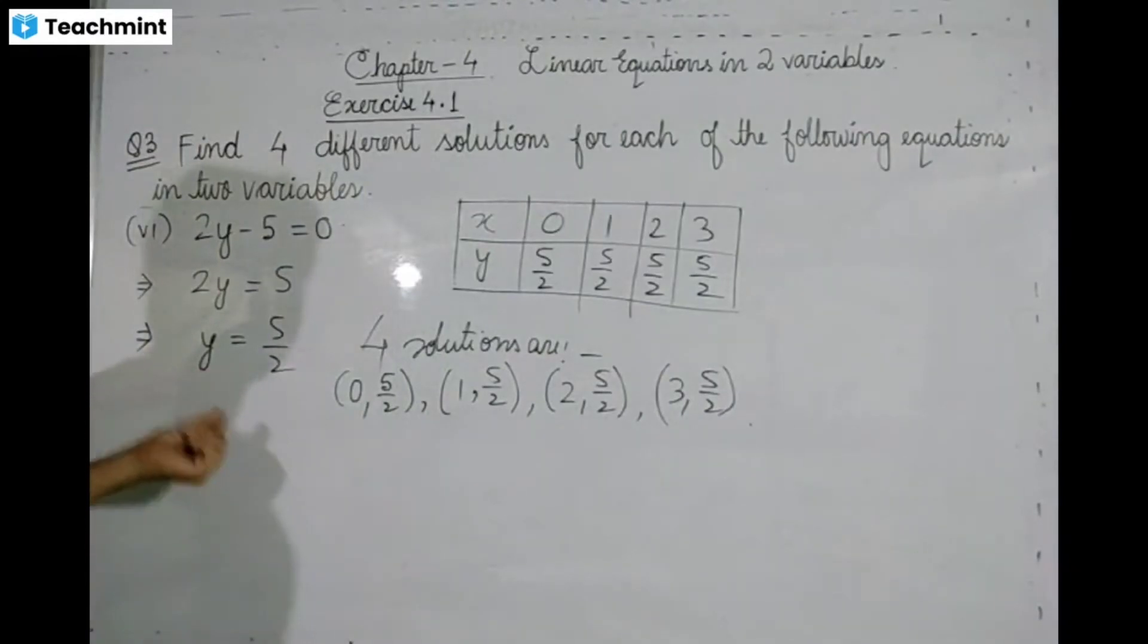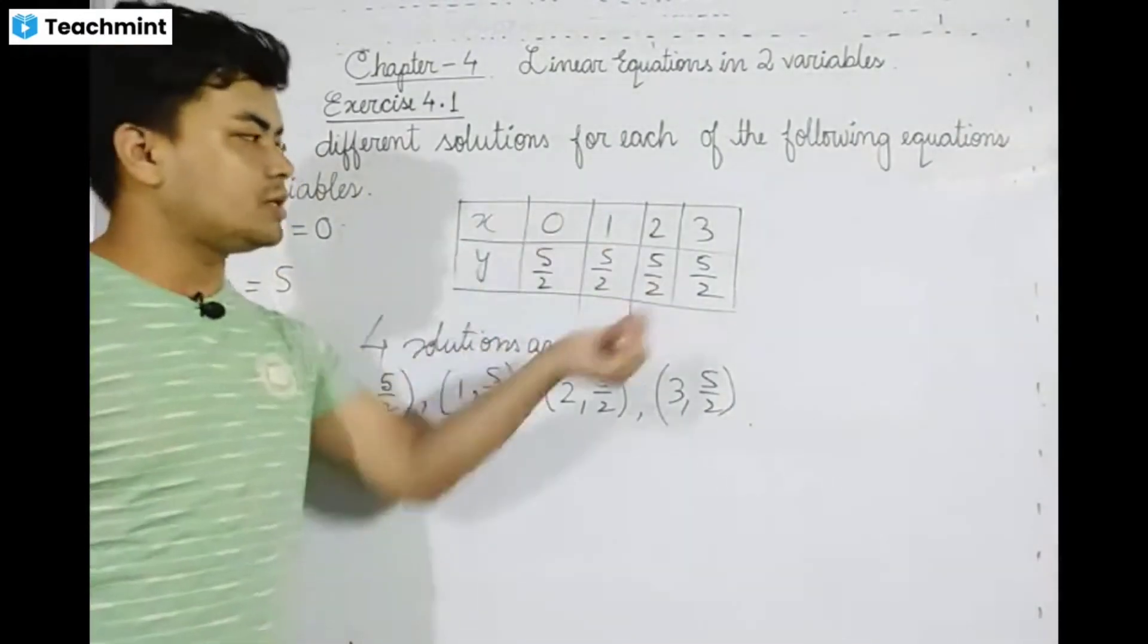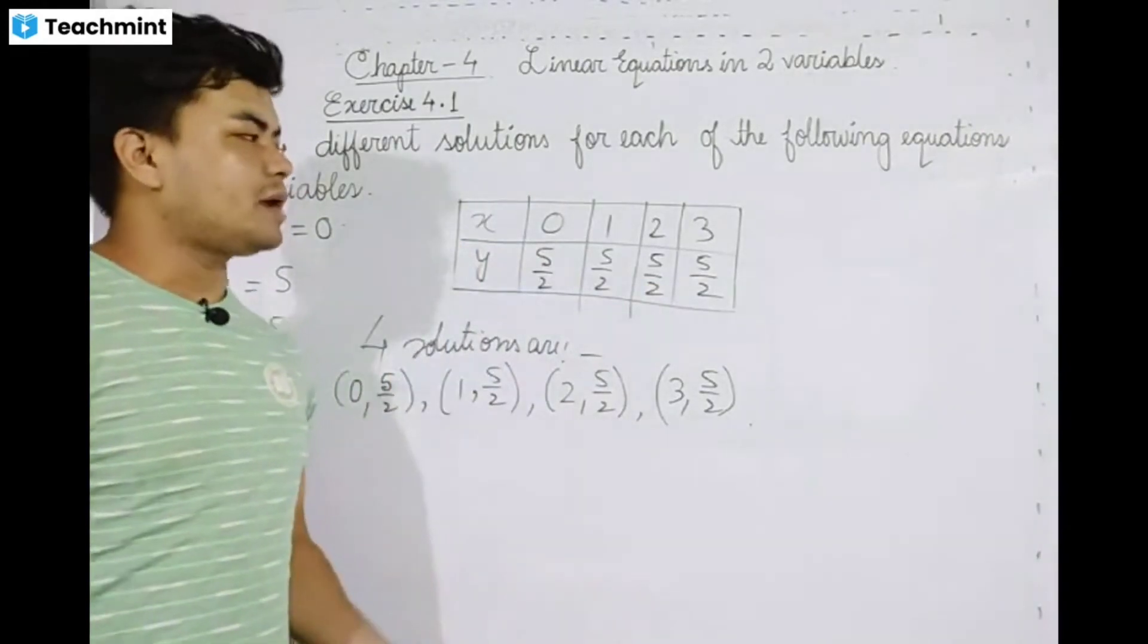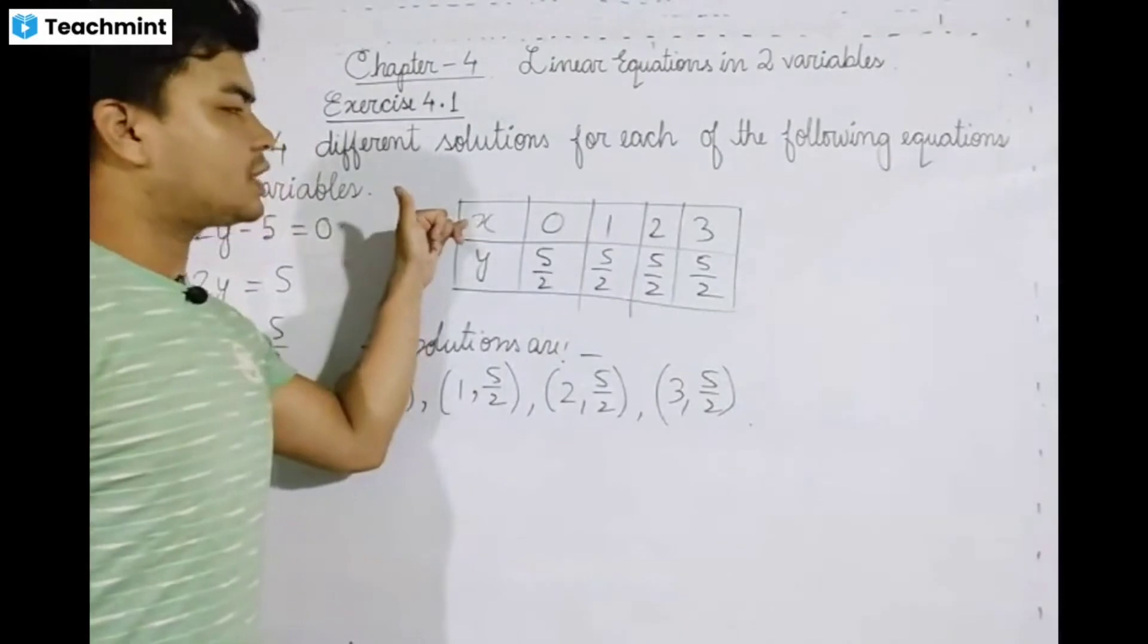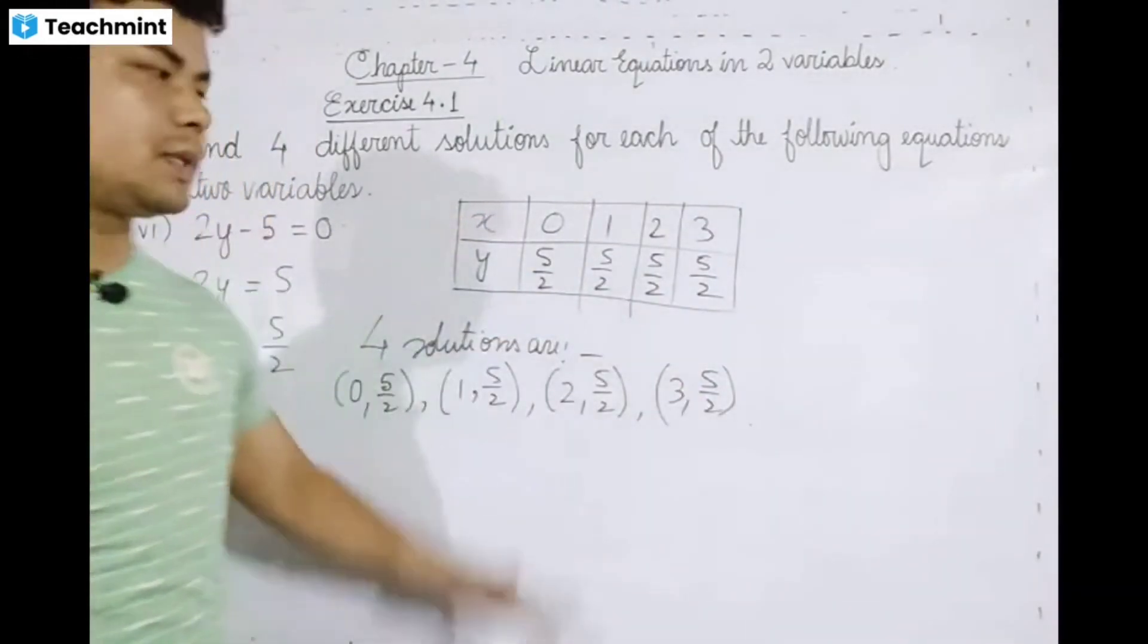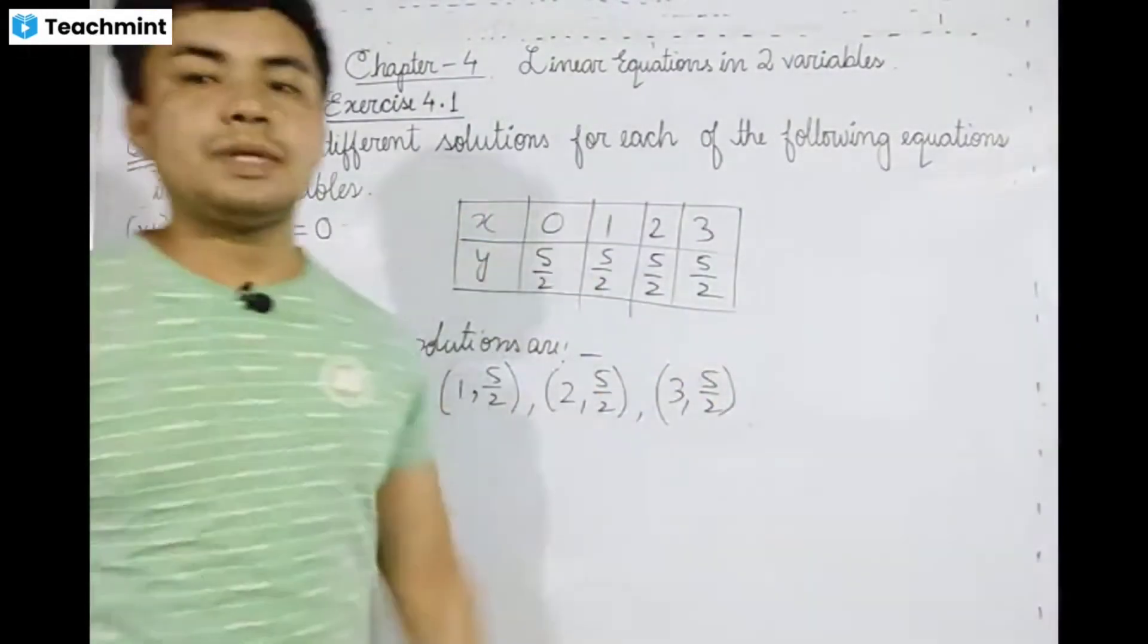X can be negative values like minus one, minus two, or any number. Y will always equal five by two. Now let's take a look at the next one.